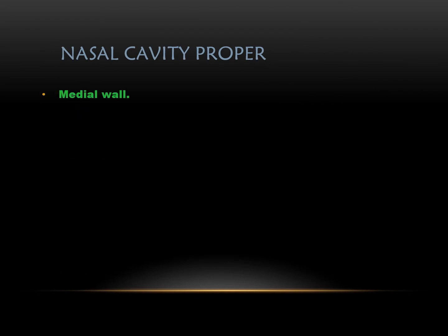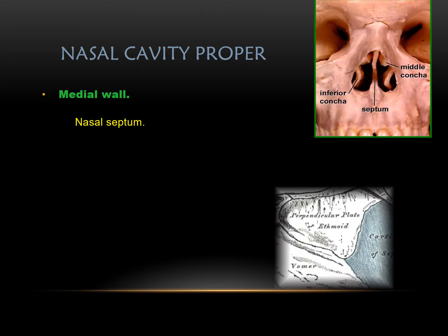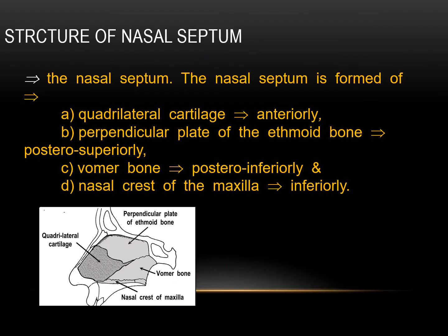The medial wall of the nasal cavity proper is formed by the nasal septum, seen in the midline separating the right side from the left side. The nasal septum is formed of a quadrilateral cartilage anteriorly, the perpendicular plate of the ethmoid bone postero-superiorly, the vomer bone postero-inferiorly, and the nasal crest of the maxilla inferiorly.